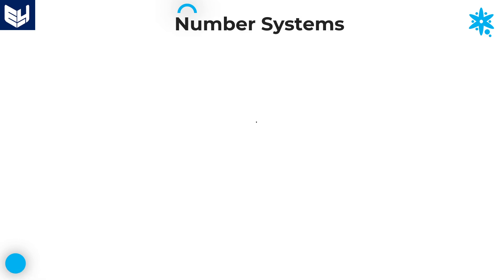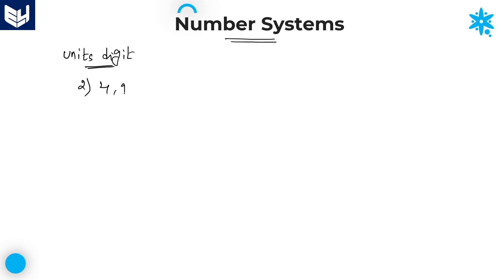Hi everyone, welcome to the session. In this session I am going to continue explaining the concept of number systems, specifically units place digit. In the last session I explained the concept of units place digit for the second category, which is 4 and 9 — if any number is ending with 4 or 9, how to calculate that particular units digit.